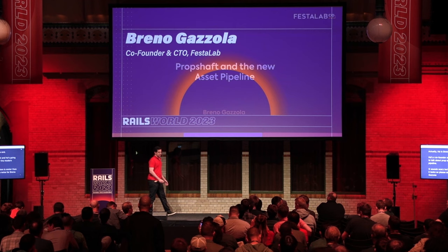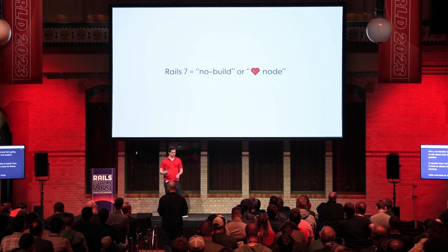Hello everyone. One of the major new features of Rails 7 was the asset pipeline, which brought with it, as David mentioned earlier, a no-build front-end development and at the same time better integration with the node ecosystem.